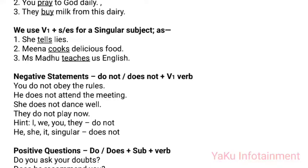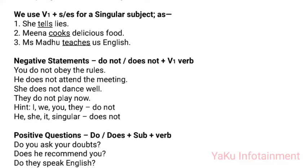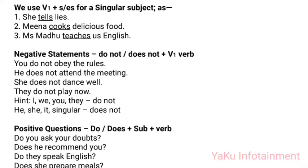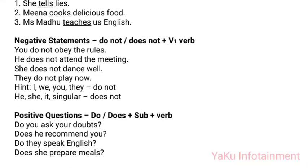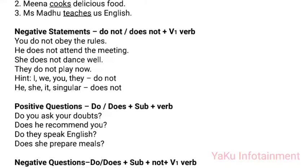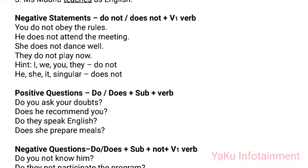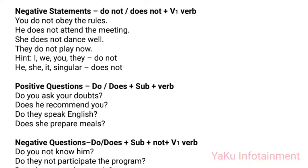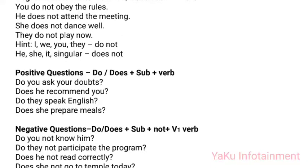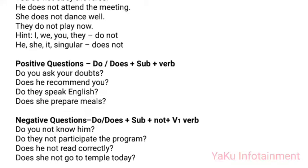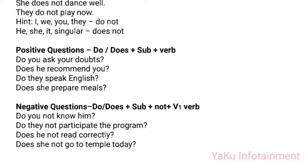Negative statements (do not/does not + V1): 'You do not obey the rules,' 'He does not attend the meeting,' 'She does not dance well,' 'They do not play now.' Hint: I, we, you, they — use 'do not'; he, she, it, singular — use 'does not.' Positive questions (do/does + subject + verb): 'Do you ask your doubts?' 'Does he recommend you?' 'Do they speak English?' 'Does she prepare meals?' Negative questions (do/does + subject + not + V1): 'Do you not know him?' 'Do they not participate in the program?' 'Does he not read correctly?' 'Does she not go to temple today?'